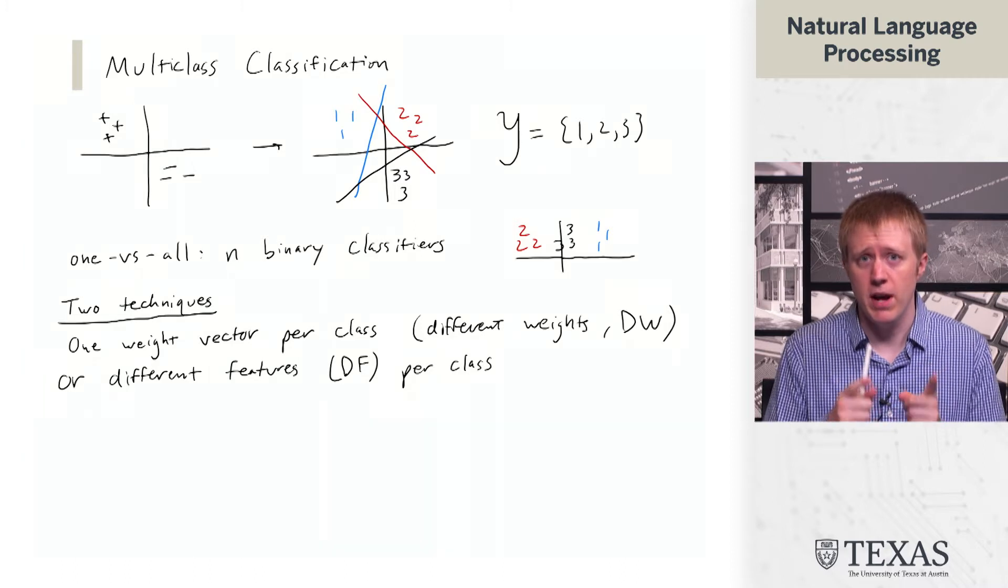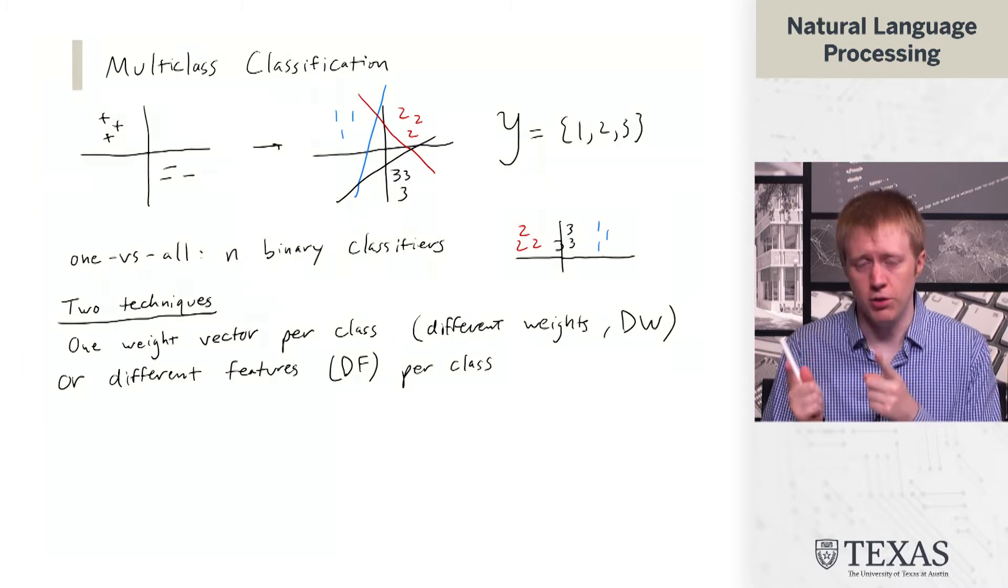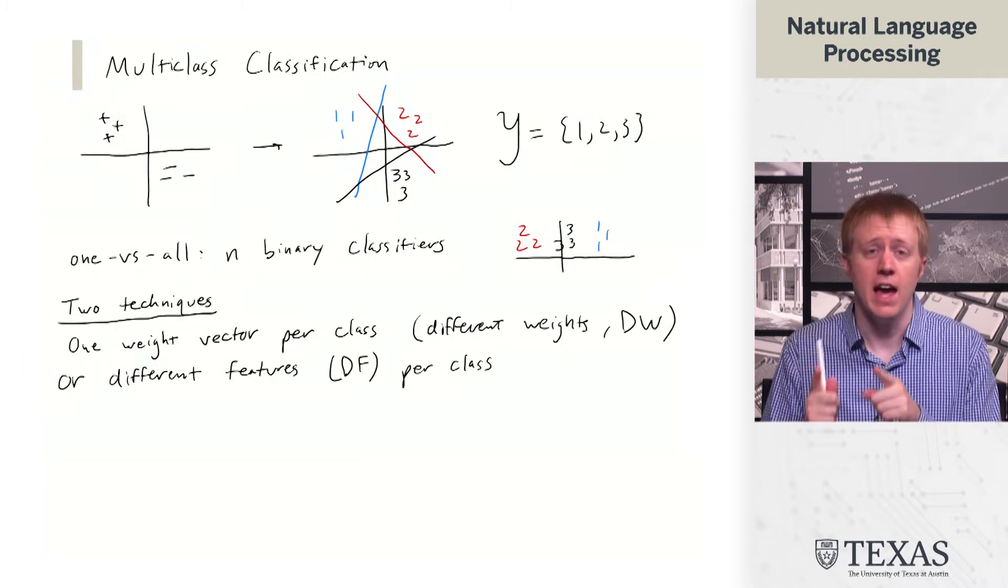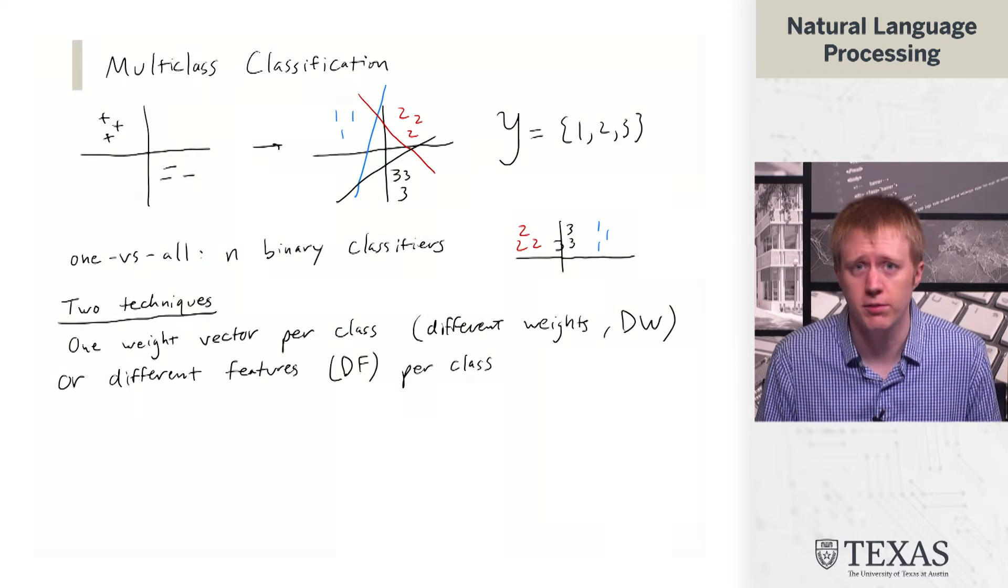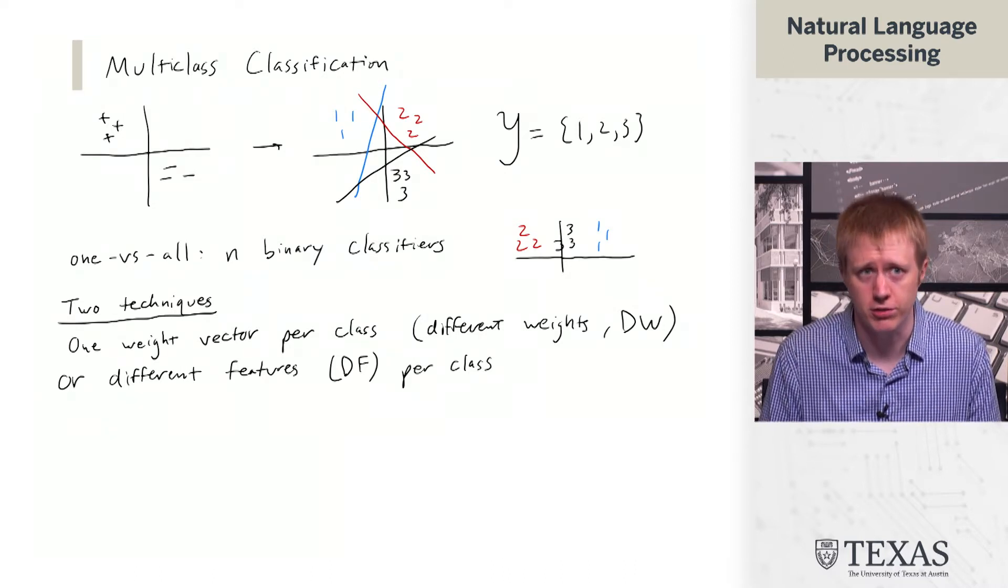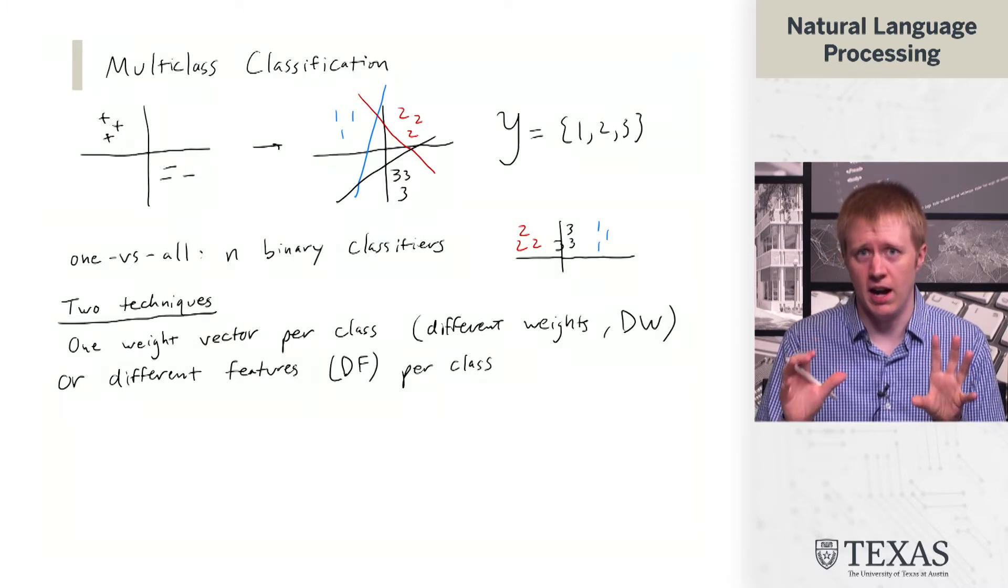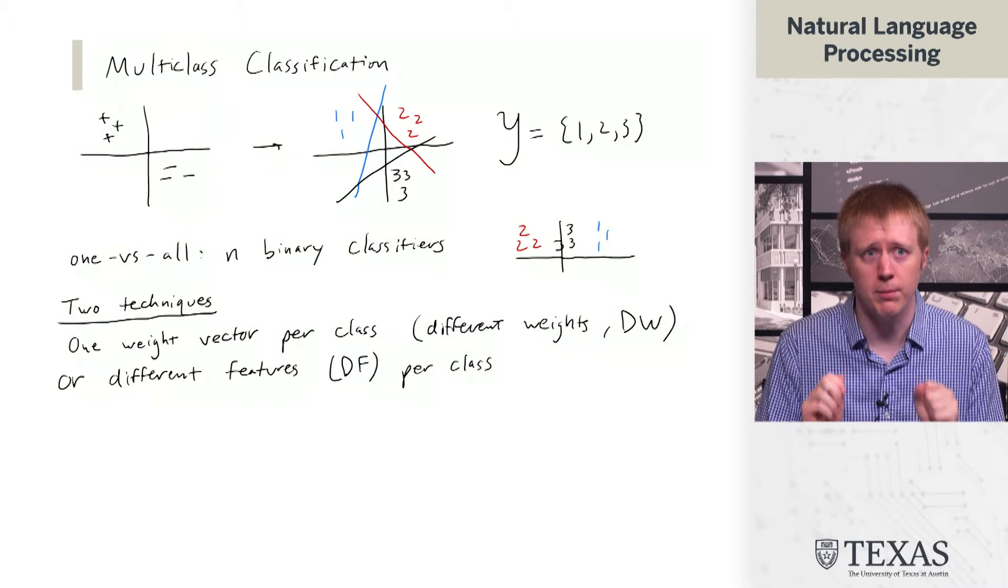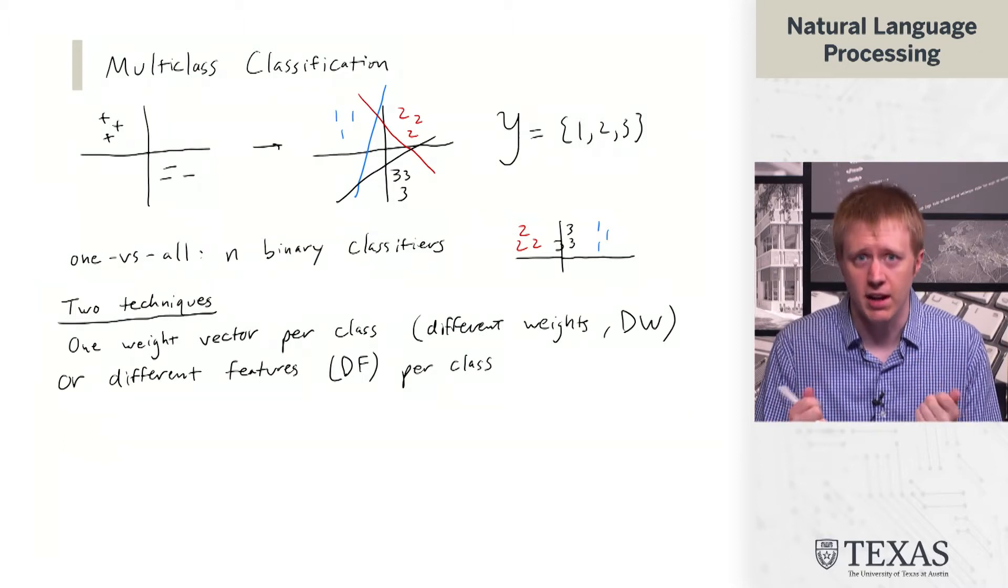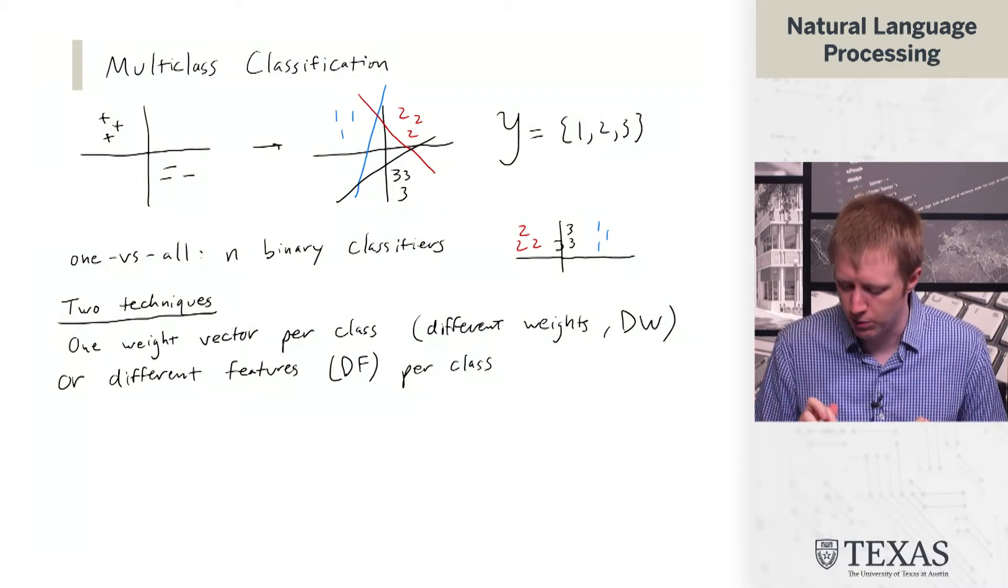Different weights is going to look like what we do when we do a lot of neural net stuff. Different features is going to be very useful for thinking about structured classification. So I want to set up both of these even though for the algorithms we're about to see they're completely equivalent.